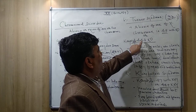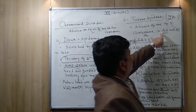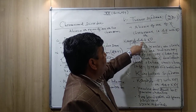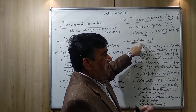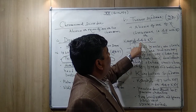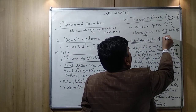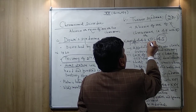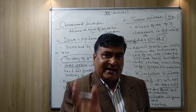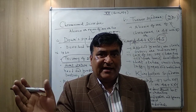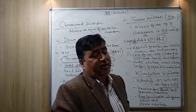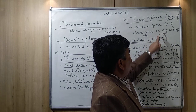The karyotype is written as 44+XO. The 44 refers to 22 pairs of autosomes, which are normal, but one X chromosome in the female is missing. The total number of chromosomes is 45. In the normal female condition the sex chromosomes are XX, giving 44+XX = 46, but here one X is absent, so the total in Turner syndrome is 45.